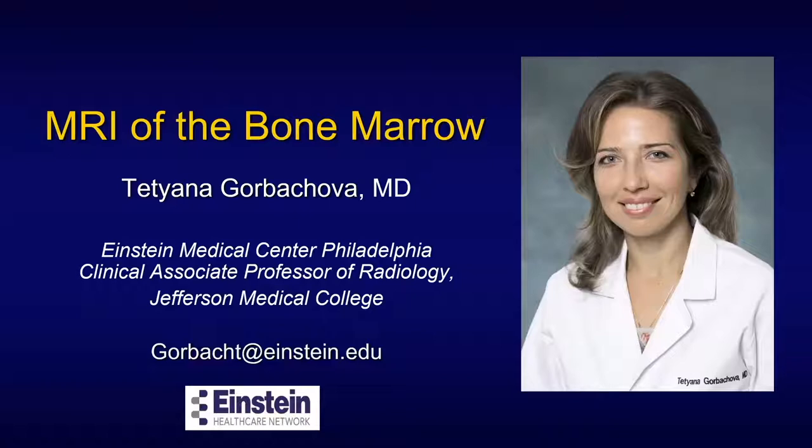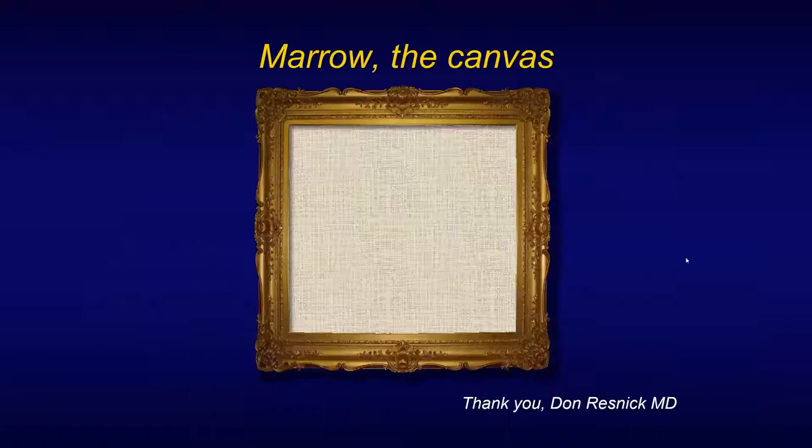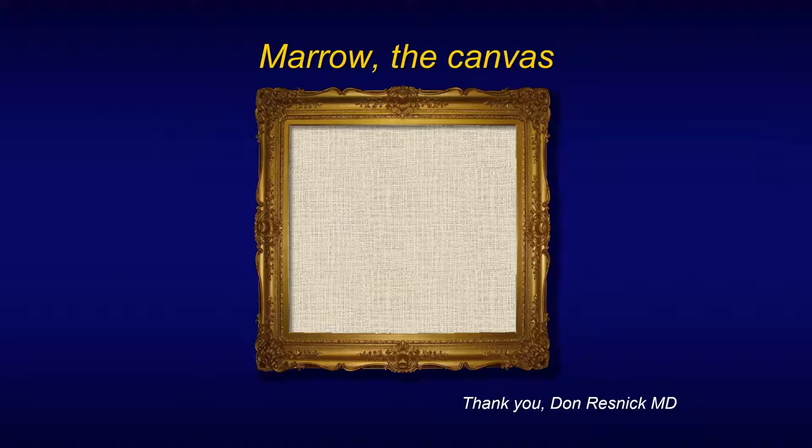It may seem that we have this oncology tumor session this morning. However, I must say that the imaging of bone marrow is the universal topic for musculoskeletal MRI in general. Because marrow is the canvas, according to Dr. Resnick, upon which the diseases paint themselves. So we must really understand the canvas so we understand the pathological processes.